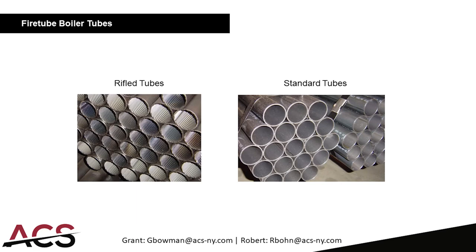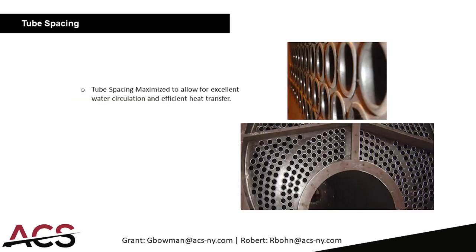There are different types of tubes. A standard tube is typically 0.105 inches in thickness. On the left are rifled tubes or XID tubes, which give more surface area and create more turbulence when the flue gases go through them, helping efficiency. Here is a picture of an assembled boiler tube sheet with nice, even spacing between the tubes, allowing for good water circulation between the tubes to receive even heat transfer to the water, which is very important for efficiency.